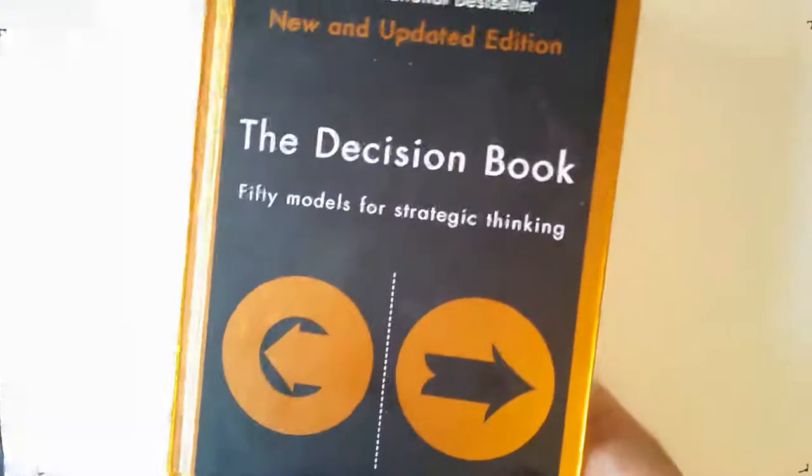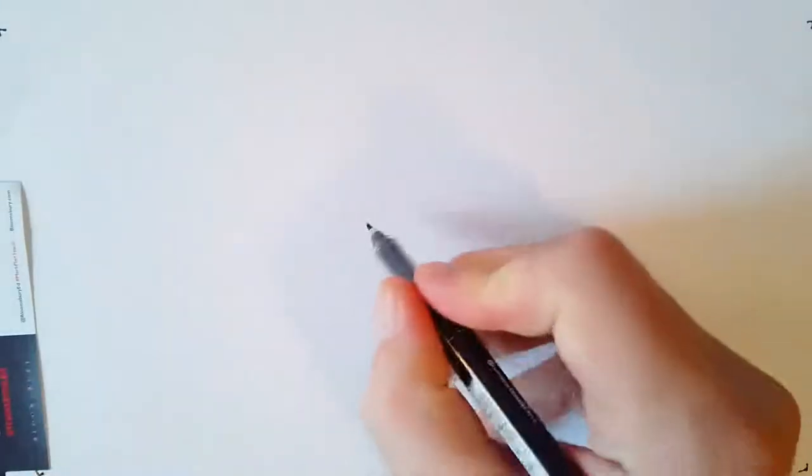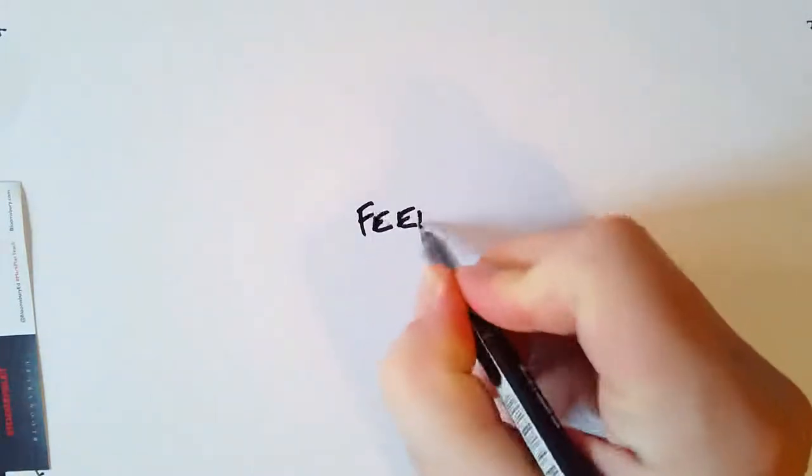Hello everyone. I've been reading this book called The Decision Book, 50 Models for Strategic Thinking, and inside there's a brilliant chapter on feedback. If we think about feedback in its broadest sense, I'm just going to do a doodle while I talk.